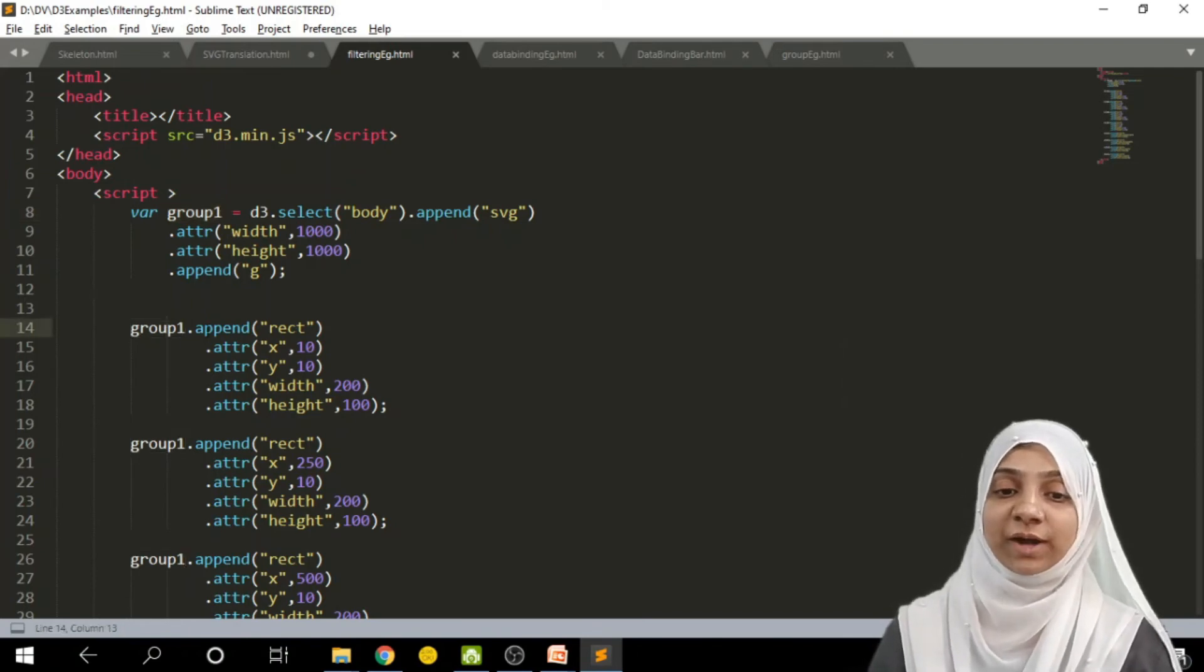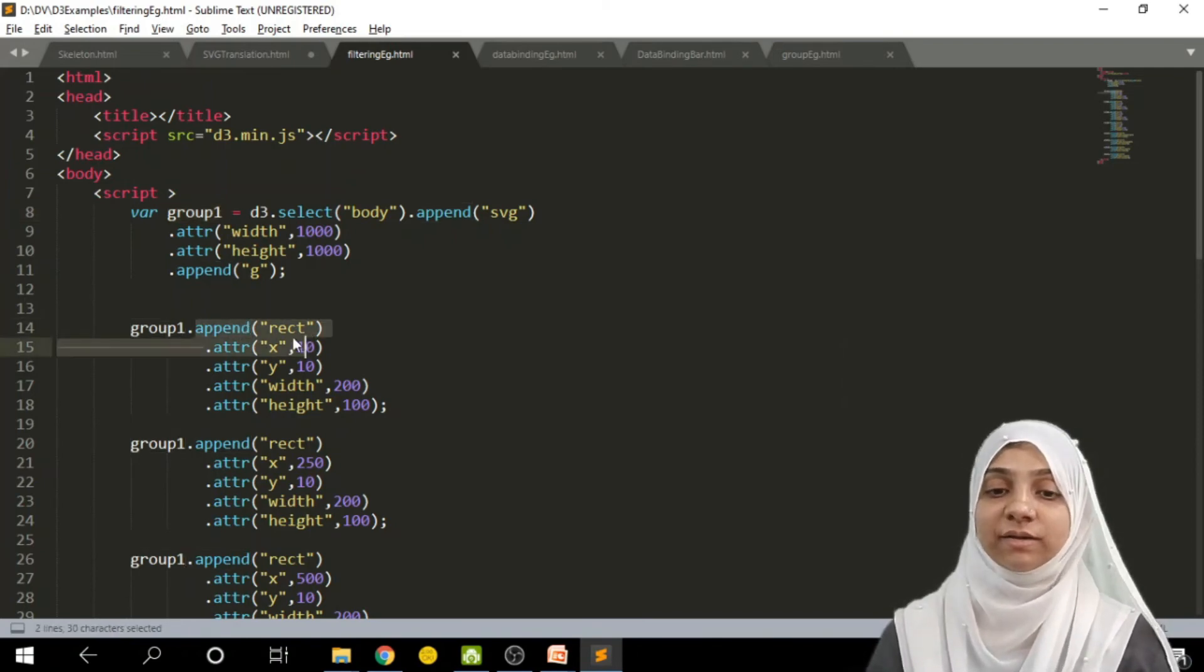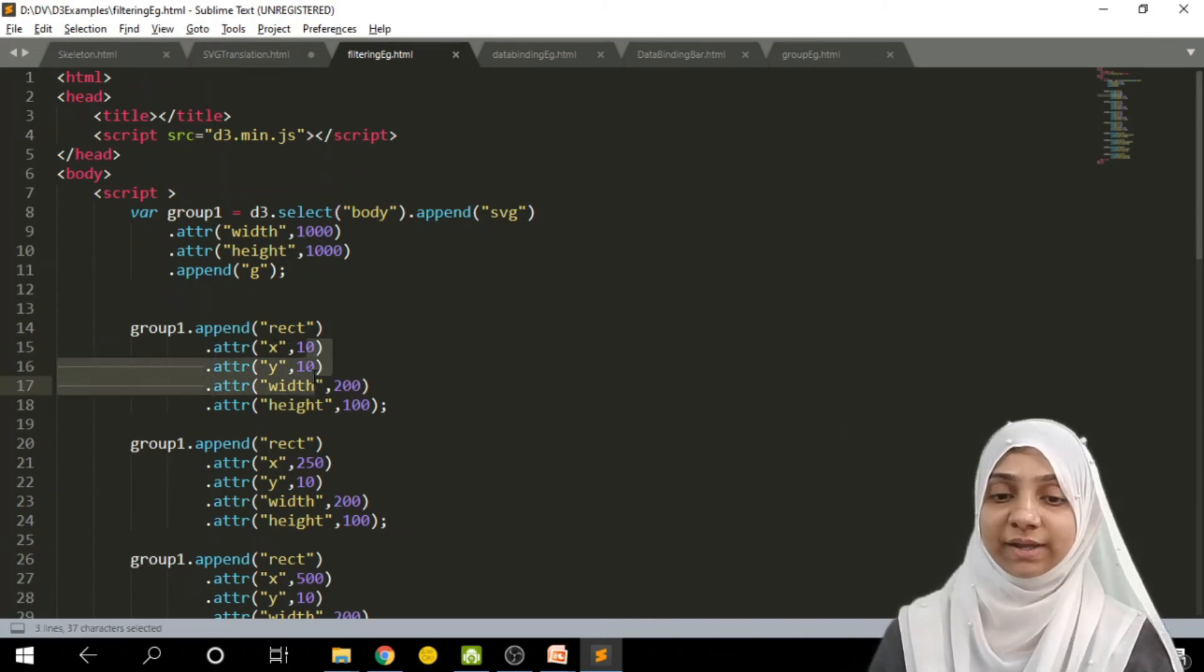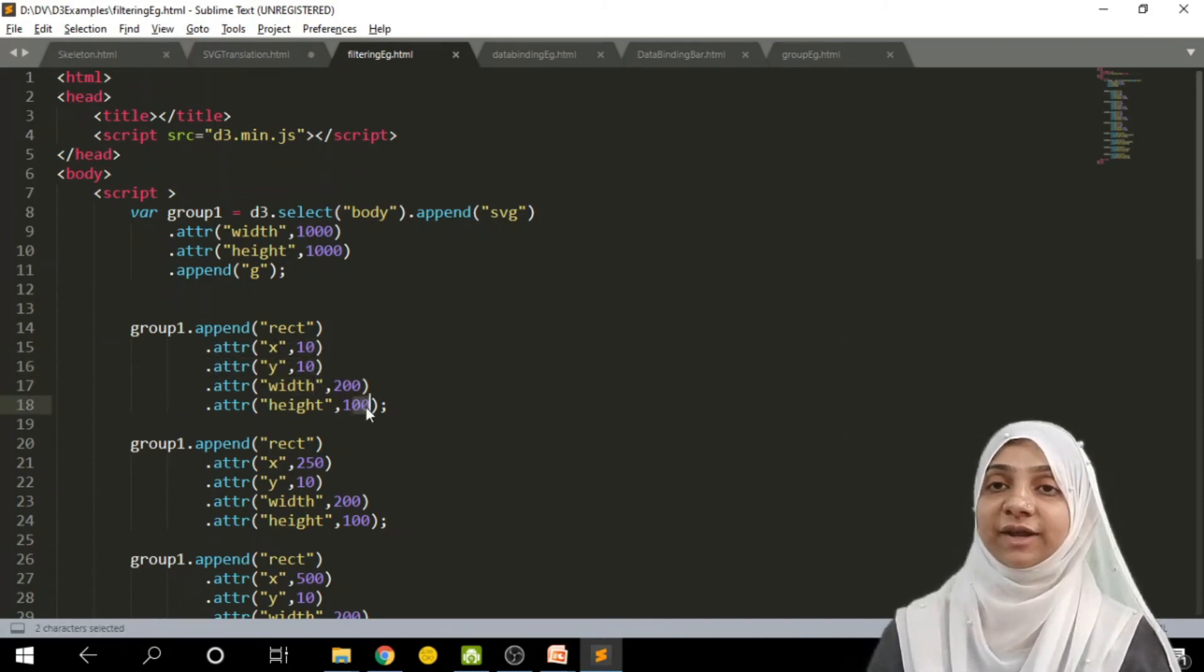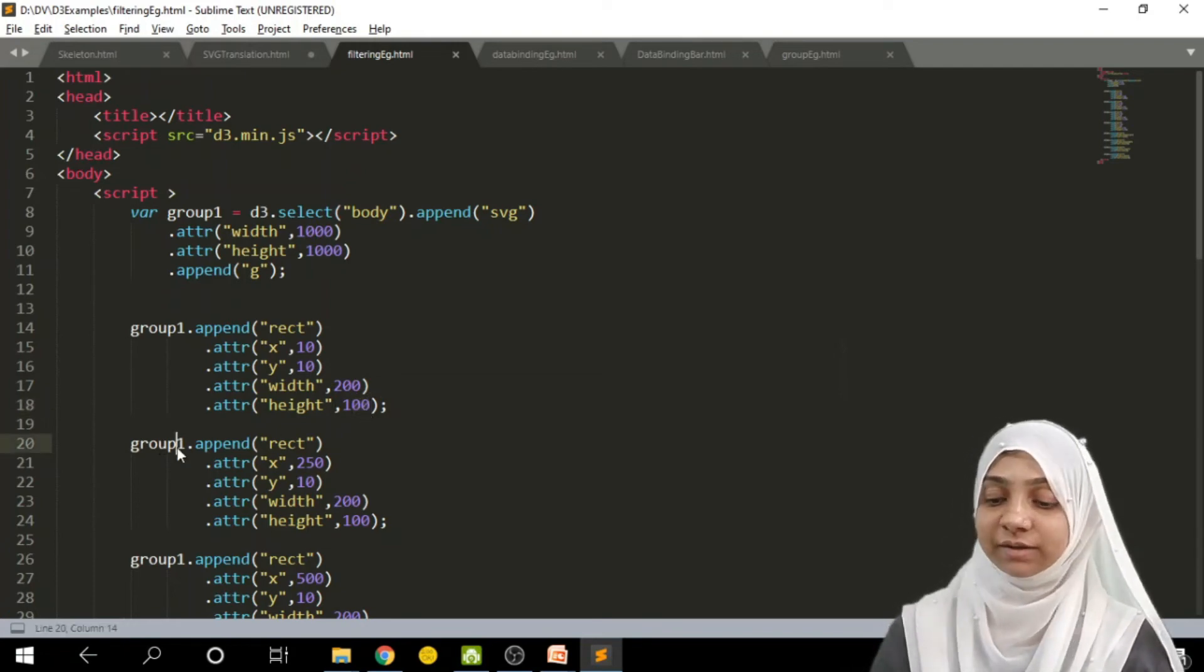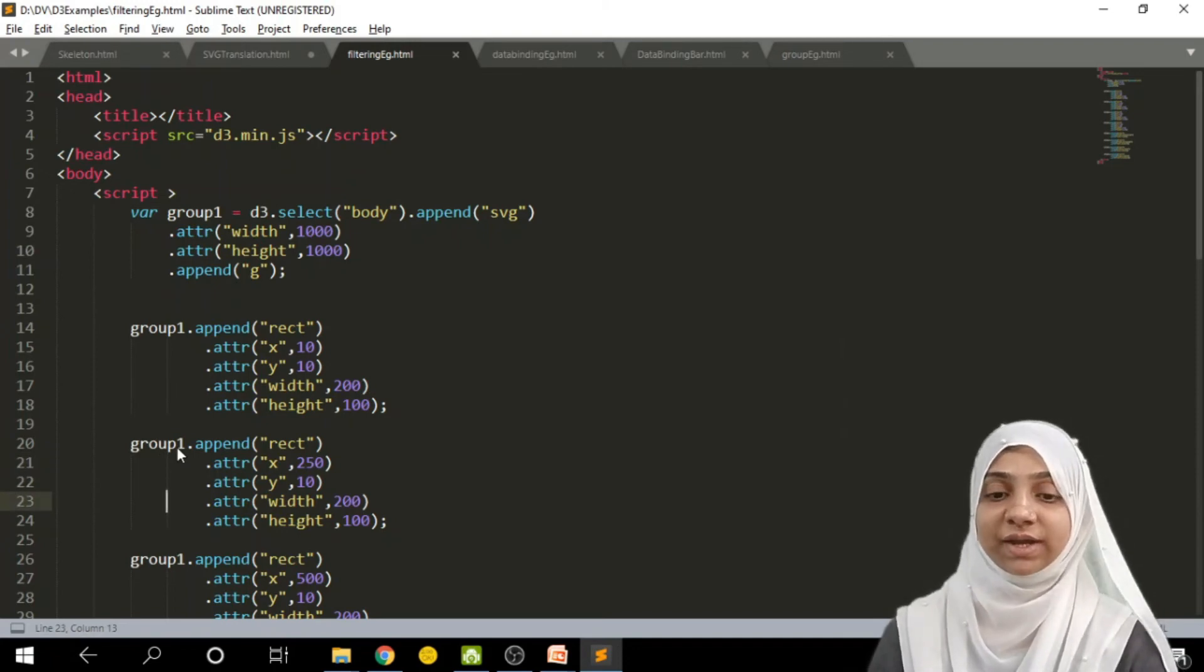Now, within group 1, we have appended one rectangle, which is at x and y coordinate 10, 10, and width and height of the rectangle is 200 and 100 pixels respectively. Similarly, we have added another rectangle at x and y coordinate 250, 10, width and height of this rectangle is same as previous one.